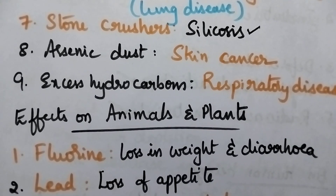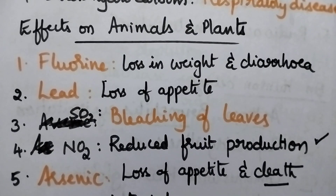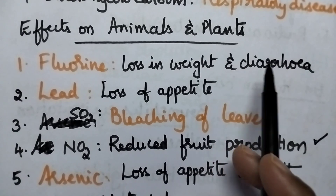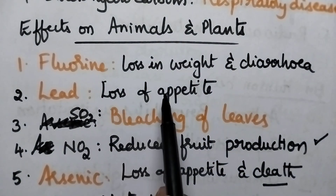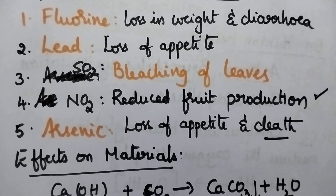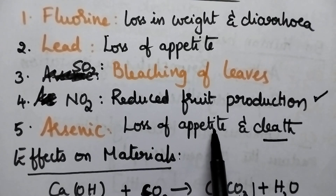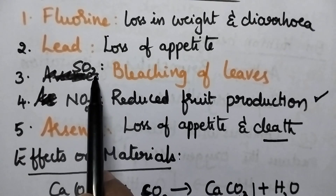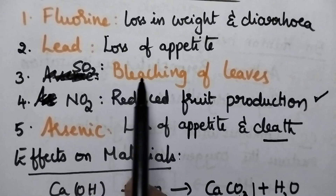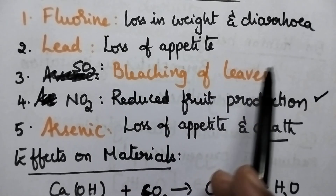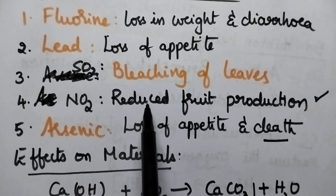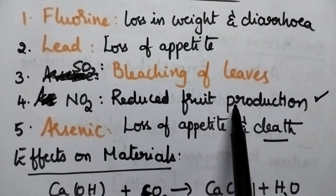Coming to the effects on animals and plants: if fluorine is present in excess, it causes loss in weight and diarrhea. Lead causes loss of appetite. Arsenic causes loss of appetite and sometimes may lead to death. If oxides of nitrogen are present, it causes bleaching of leaves of plants. If nitrogen oxide is present, it causes reduced fruit production.